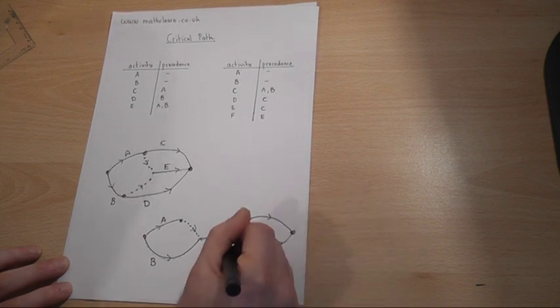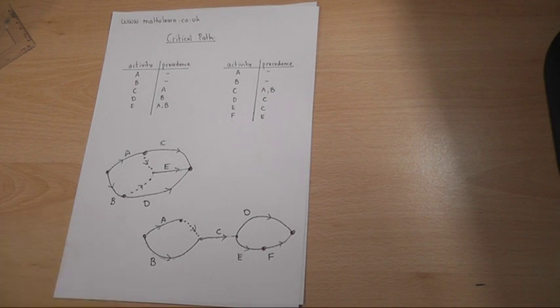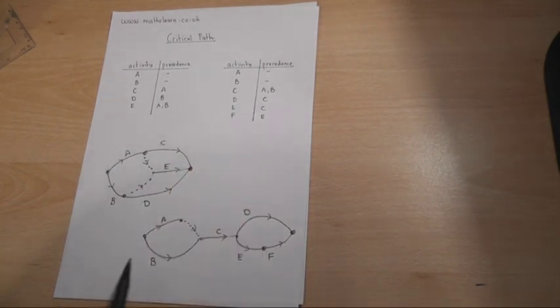In the network, and that is the correct network for that table with that quirk where you cannot have two distinct arcs starting and finishing at the same place.